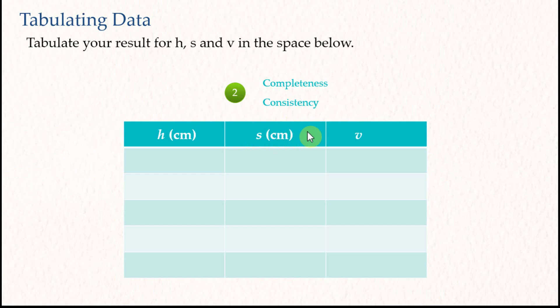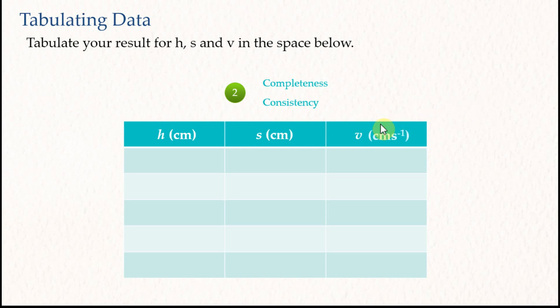V is speed, but sometimes students do not write the unit, making the table incomplete. For a complete table, you must have the titles and units of all variables. The unit for V should be centimeters per second. If you have this, the table is complete and you will get one mark for completeness.